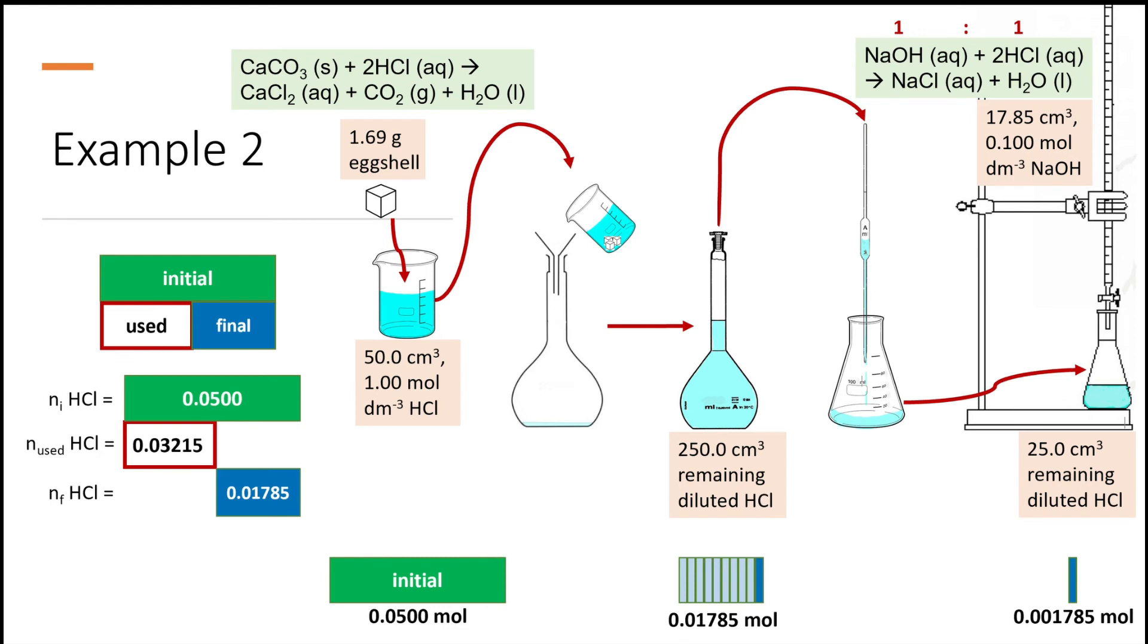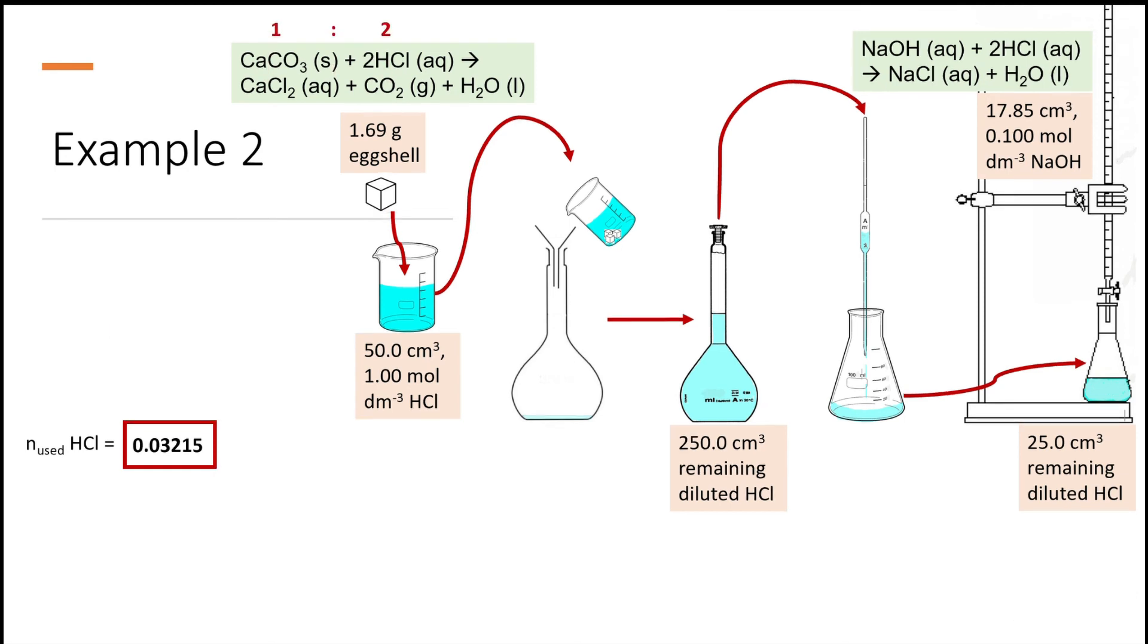And we find that the mole of hydrochloric acid that reacts with calcium carbonate in the eggshell is 0.03215 mole. Now the molar ratio between calcium carbonate and hydrochloric acid is 1:2, so the number of mole of calcium carbonate is half that of hydrochloric acid.